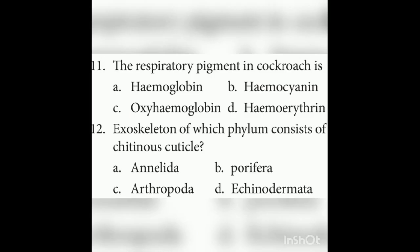Eleventh question: The respiratory pigment in cockroach. The options are hemoglobin, oxyhemoglobin, hemocyanin, and hemoerythrin. Hemocyanin and hemoerythrin are not present in cockroach. The answer is none of the above.